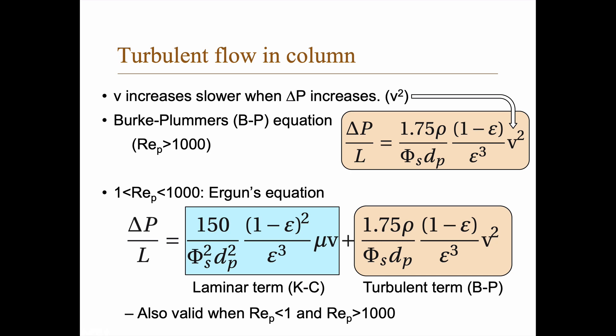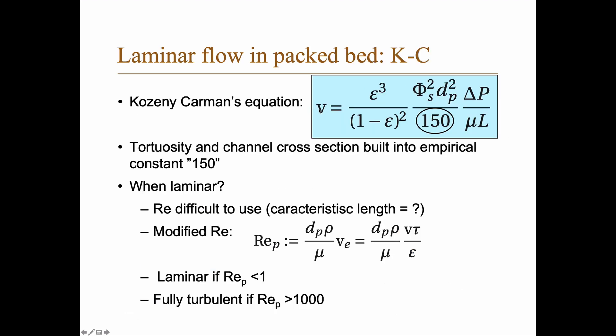Now if we have turbulent flow in a column, then we need to use another equation, the Burke-Plummers equation. And in that equation, V increases slower when the pressure we apply increases. And you see that here, that if you have V squared here, and in the earlier equation we have V here.